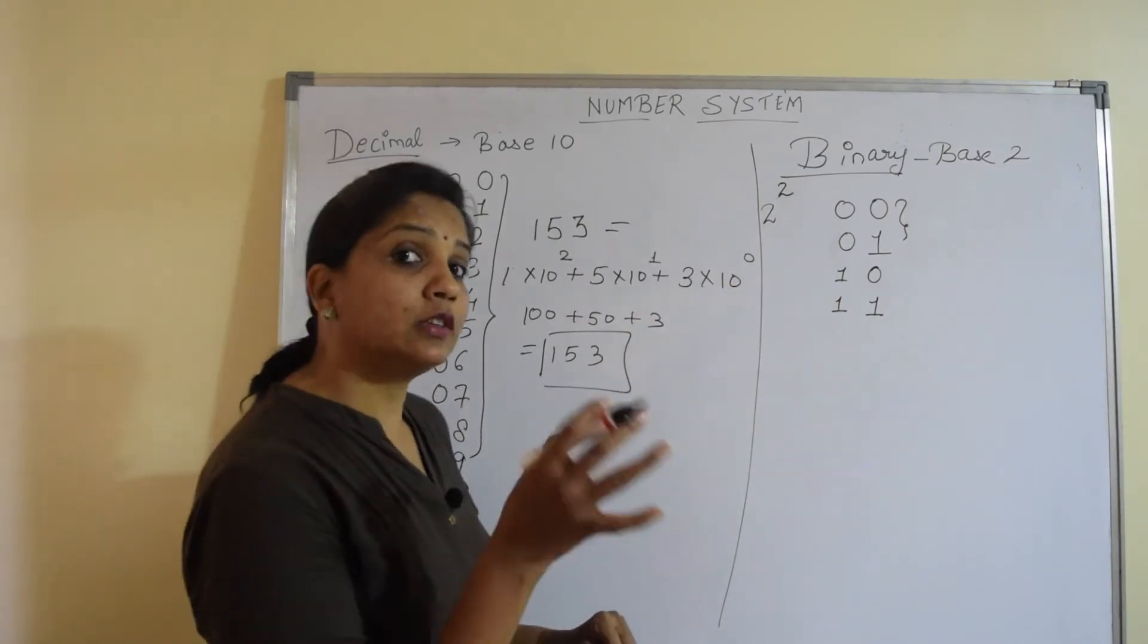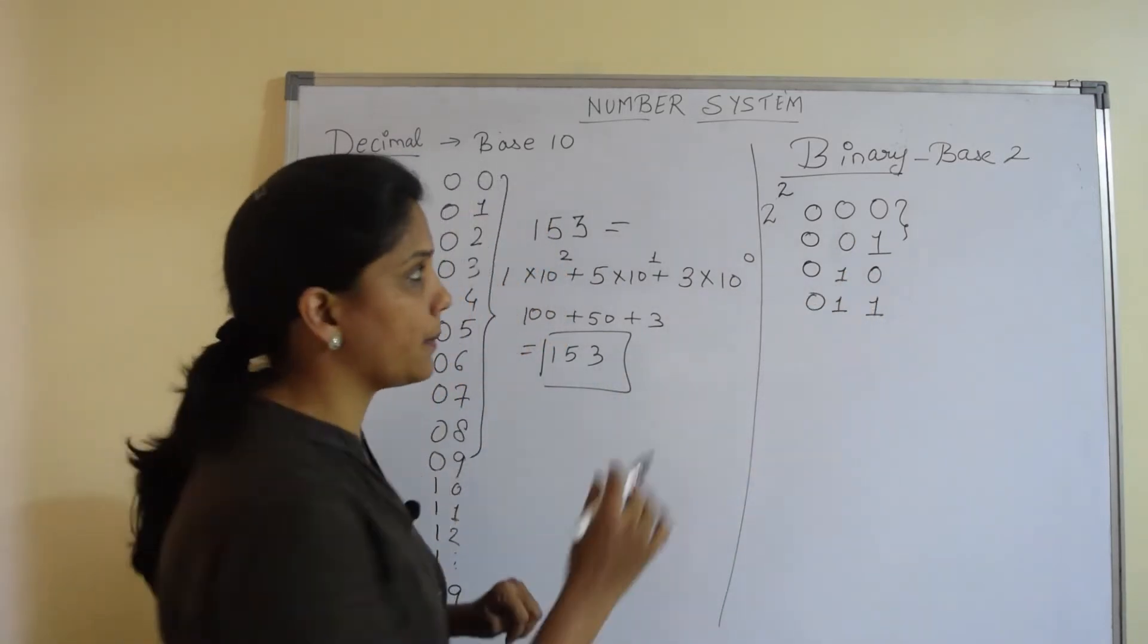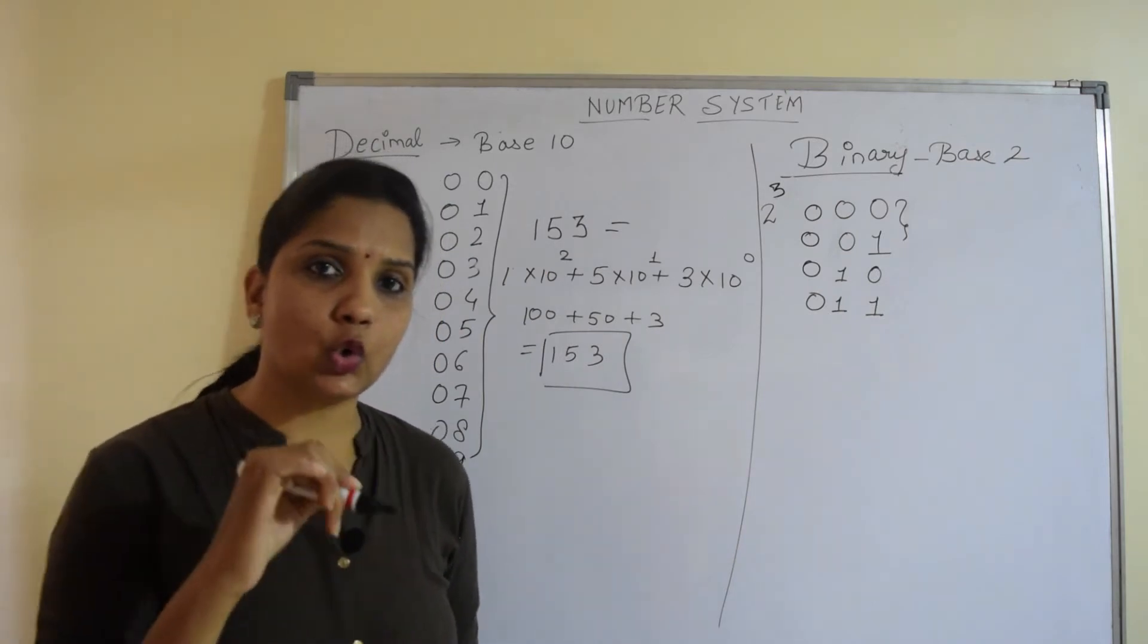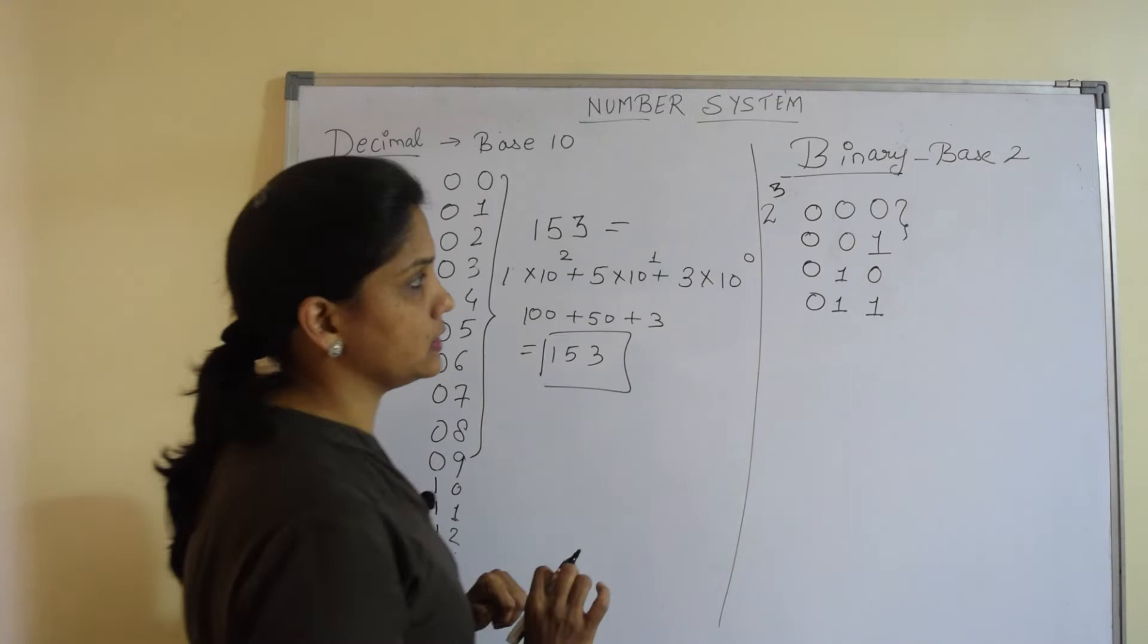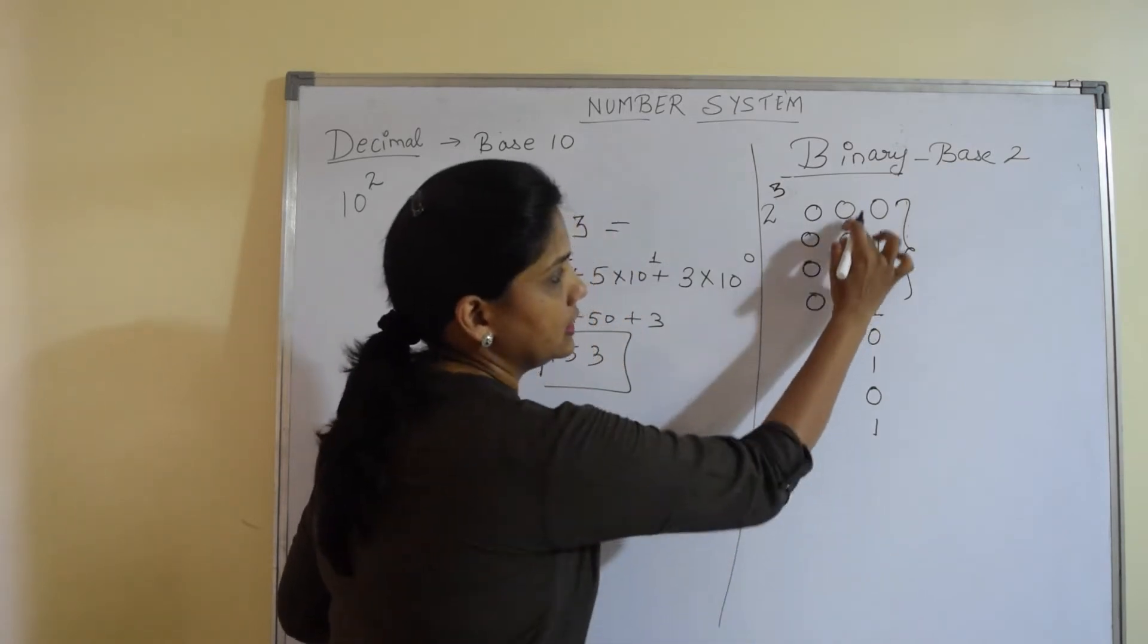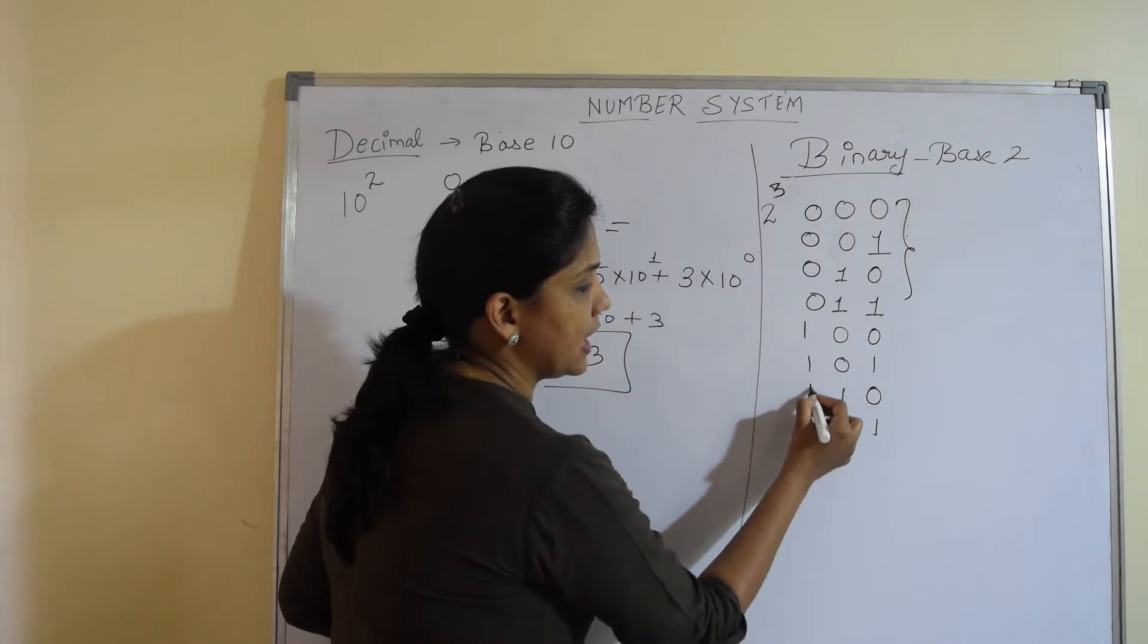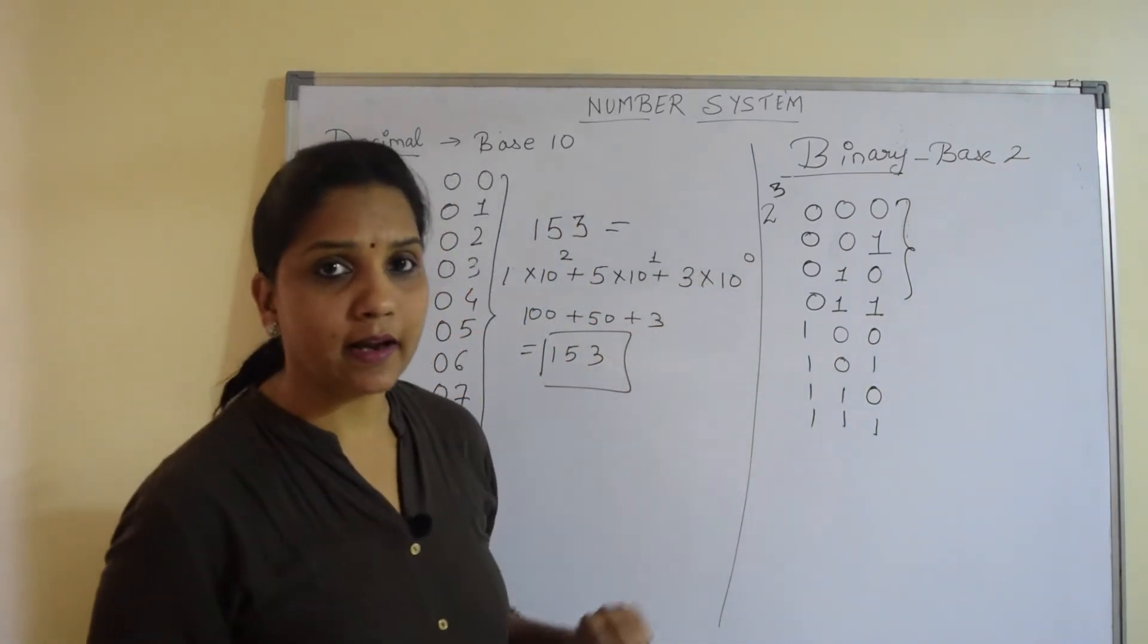Same way for a 3 digit number, I can add a 0. So this becomes a 3 digit number. 2 to the power 3, that means I can create 2 into 2 into 2, that is 8 binary numbers. For that, again we will be repeating these 4 pairs 0, 1, 0, 1, 0, 0, 1, 1 and I will just add a 1. So you can see, we get 3 digit binary numbers.